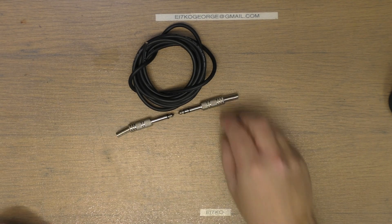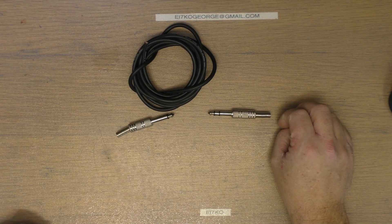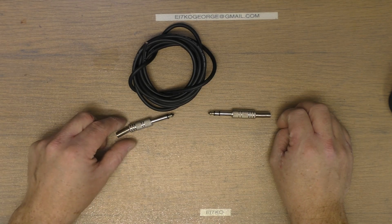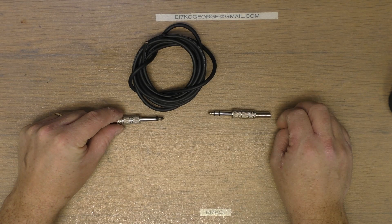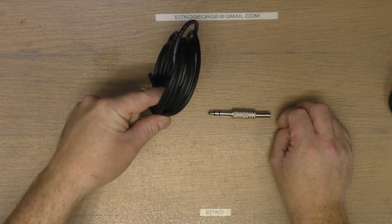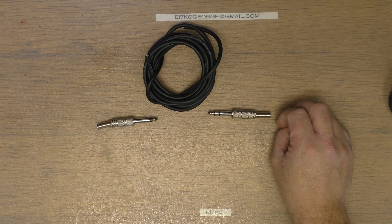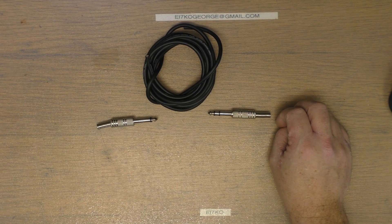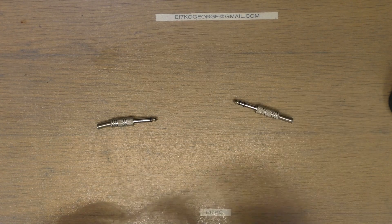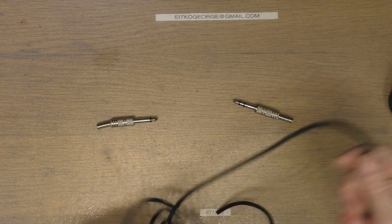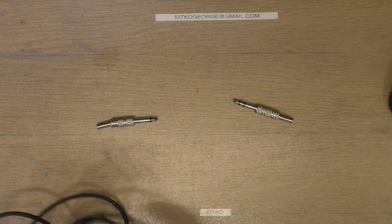We have a few bits here: a TRS, so we know from the previous discussion that that is a balanced connector, and then we have a TS which is an unbalanced connector. And we have about a meter and a half of Van Damme star quad cable. So let's get going at it and we'll show you what's what. The first thing I always like to do is get the cable stripped and get it ready.